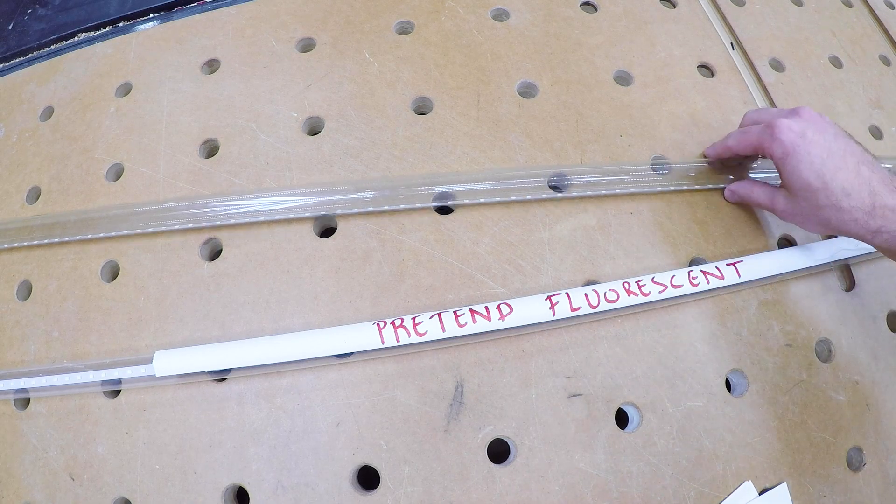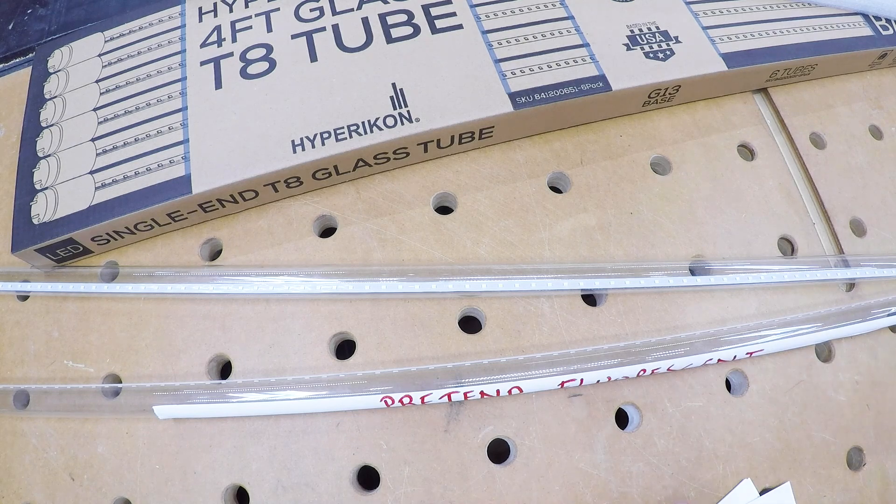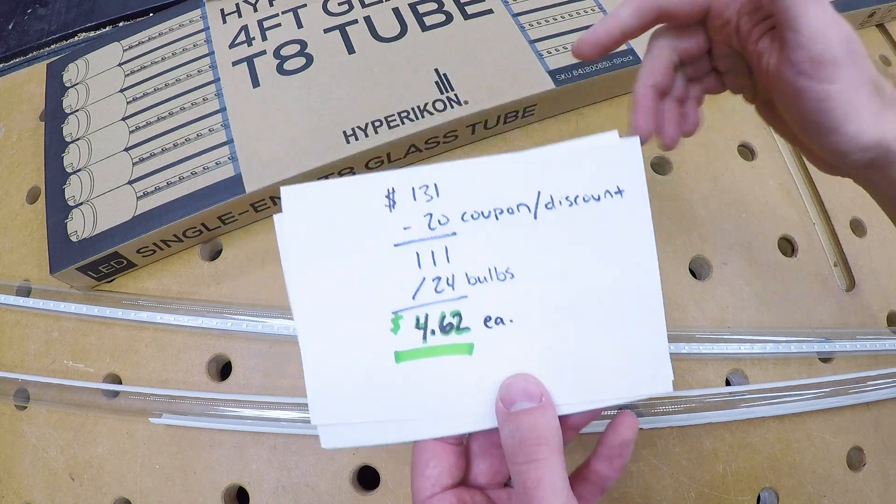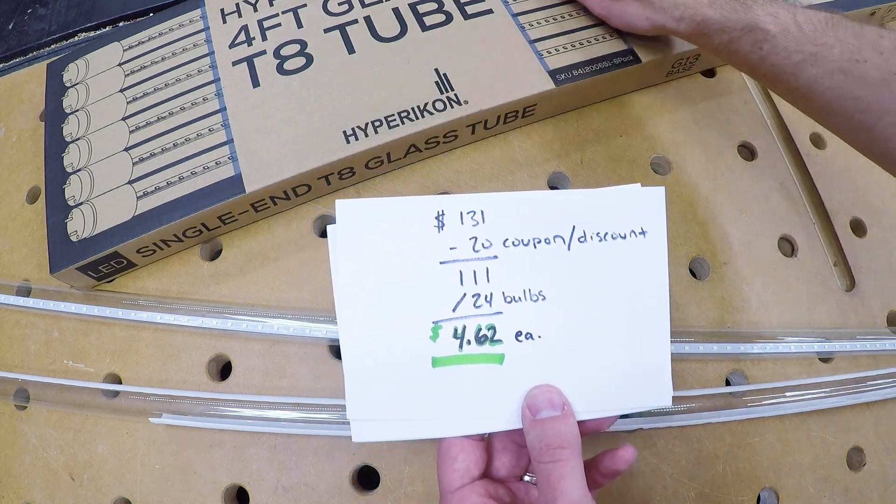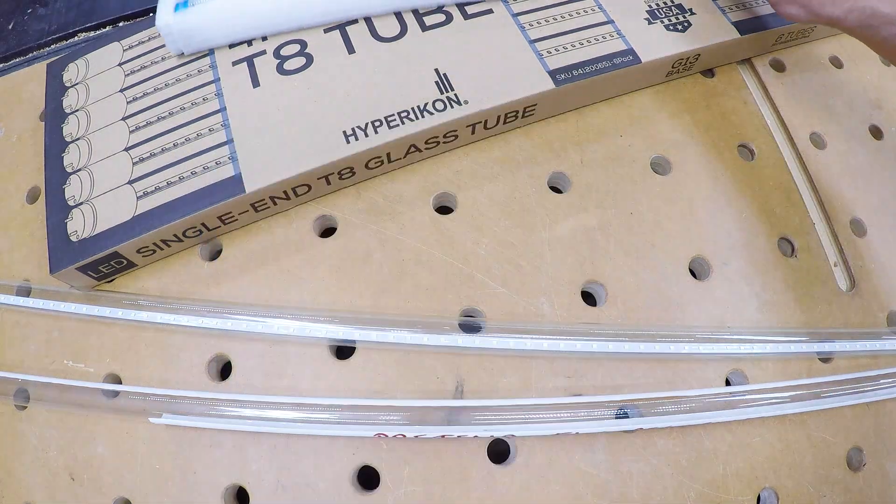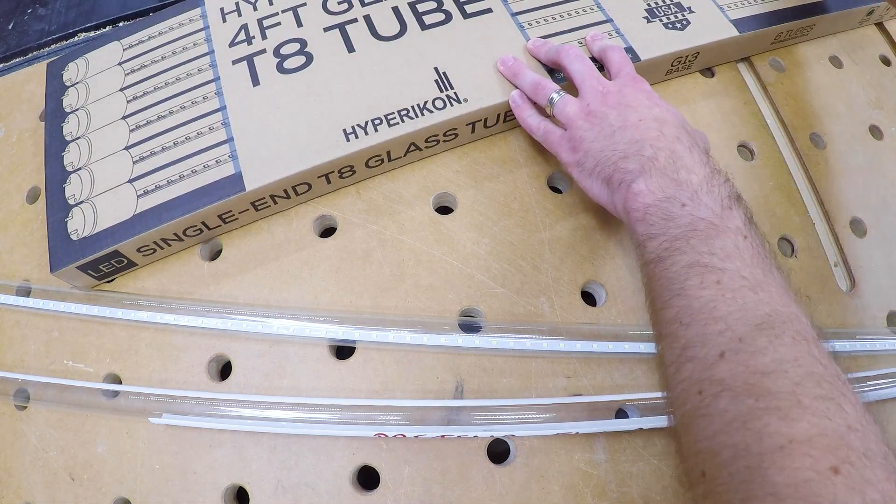I want to show you the LEDs I bought, the certain features that might be underappreciated. These I bought in a 24-pack, these Hypericon LED tubes, $4.62 each. I'll put a link in the description. I want to point out the features that I saved money on and I think are well worth the savings.